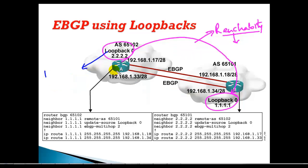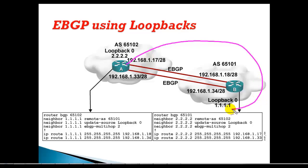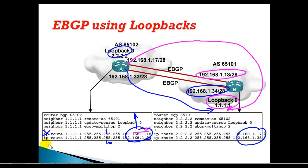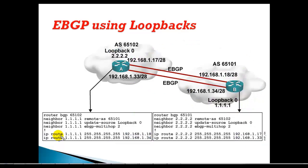For loopback-to-loopback reachability in our scenario, we'll use static routes. On Router A, we provide reachability to Router B's loopback via next-hop 192.168.1.18, and a second route via the other link. The same is done in reverse from Router B. You can configure load balancing, or assign different administrative distances to make one route primary and the other a backup.